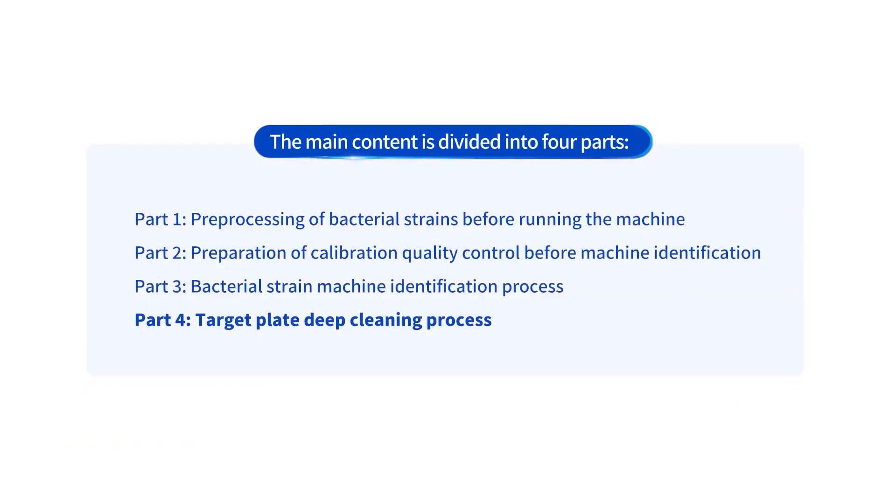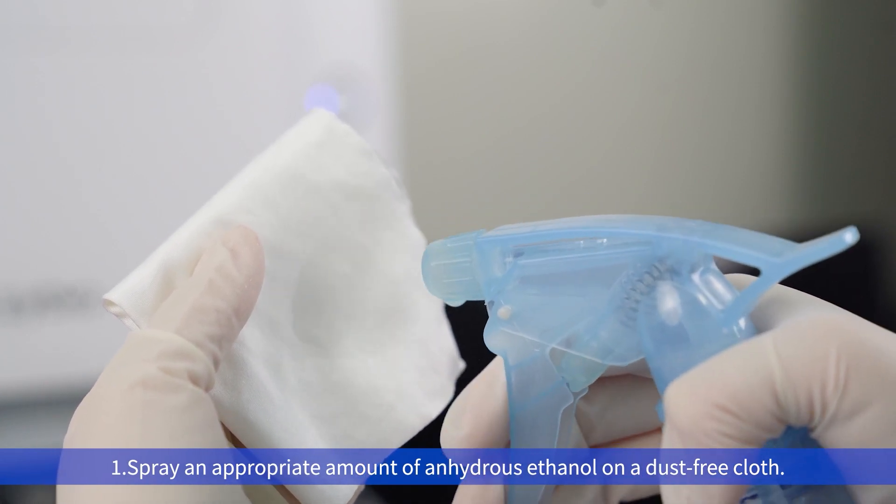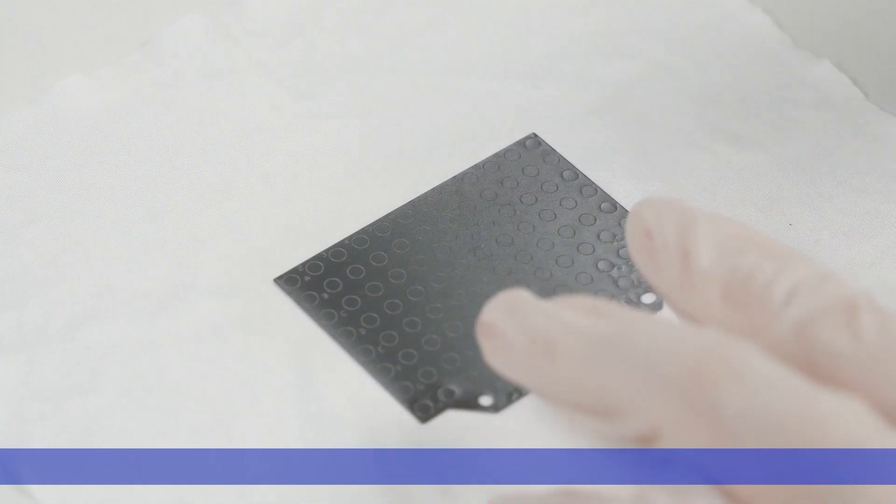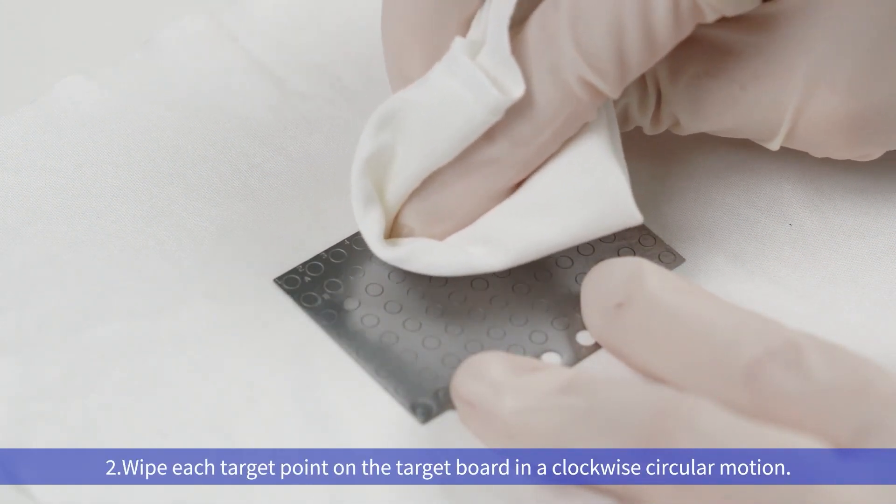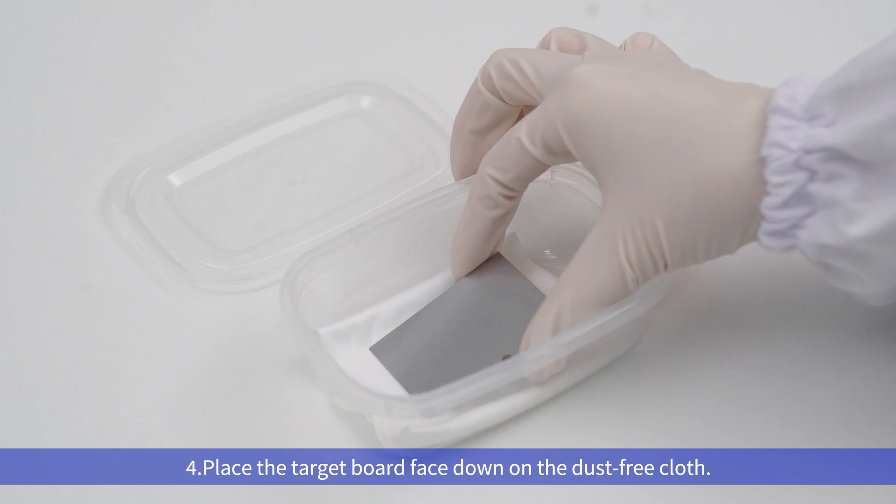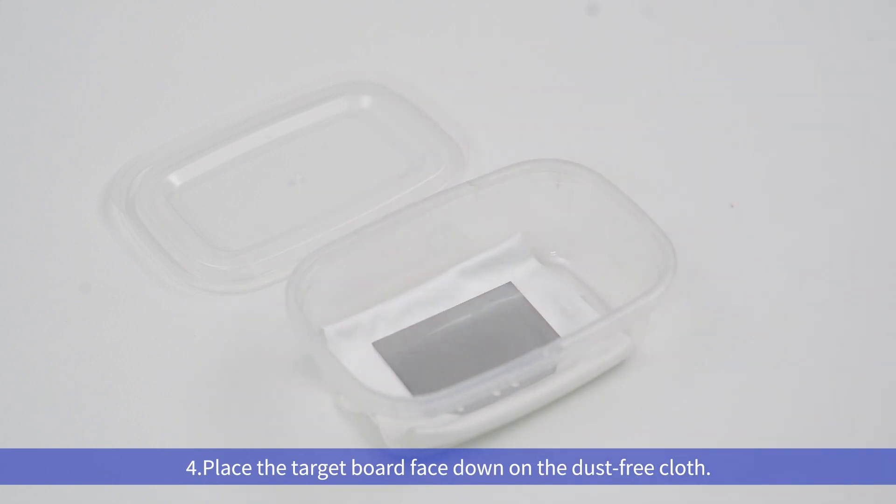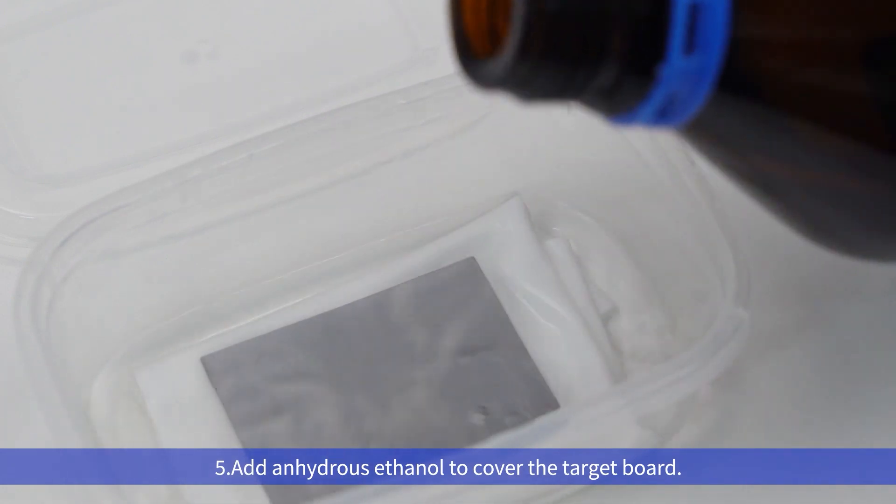Part 4: Target plate deep cleaning process. First, spray an appropriate amount of anhydrous ethanol on a dust-free cloth. Second, wipe each target point on the target board in a clockwise circular motion. Third, fold clean dust-free cloth in half and lay flat on the bottom of the target board cleaning box. Fourth, place the target board face down on the dust-free cloth. Fifth, add anhydrous ethanol to cover the target board. Sixth, place the cleaning box in an ultrasonic cleaning machine. Add a suitable amount of pure water to make the cleaning box float.